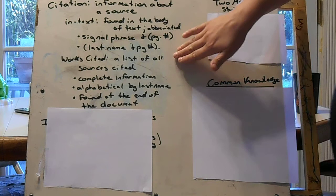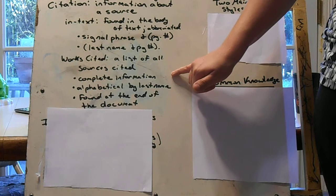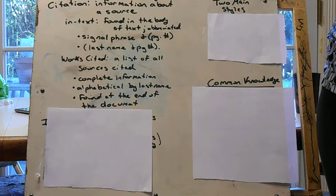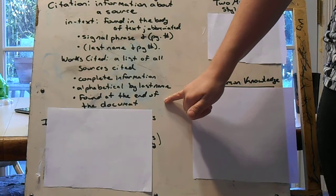It is complete information, everything that you need to know, everything the reader needs to know. It's alphabetical by last name, so anything that any author that starts with an A would come before Booth. And it's found at the end of the document. So once you're done writing, you're going to go to the next page and that's where you'll find the works cited page.